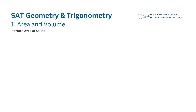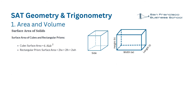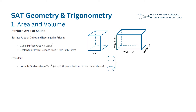Surface area of solids. Surface area of cubes and rectangular prisms. Cube: Surface area equals 6 times side squared. Rectangular prism: Surface area equals 2 times l times w plus 2 times l times h plus 2 times w times h.